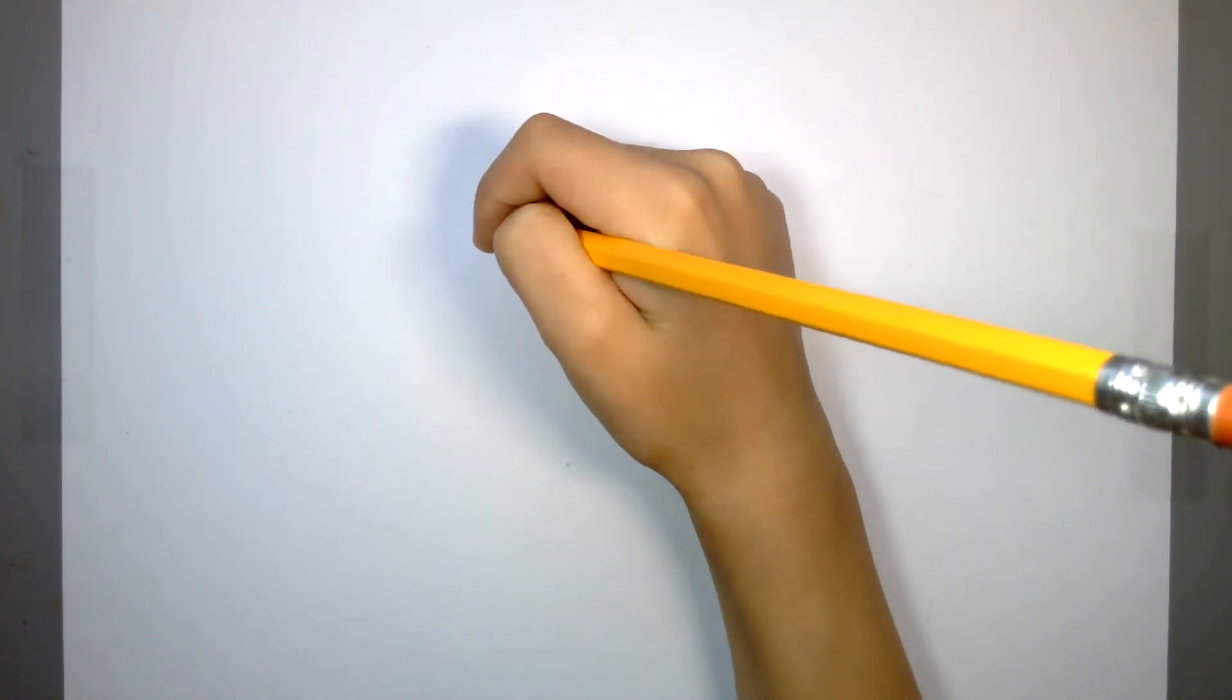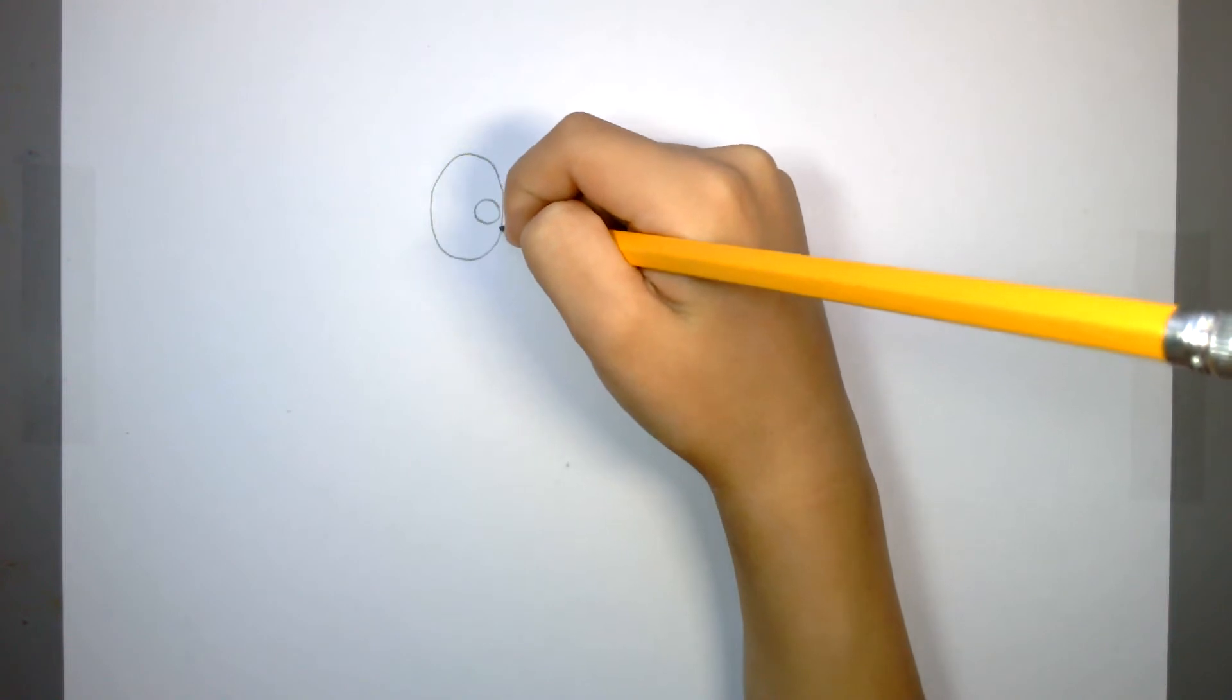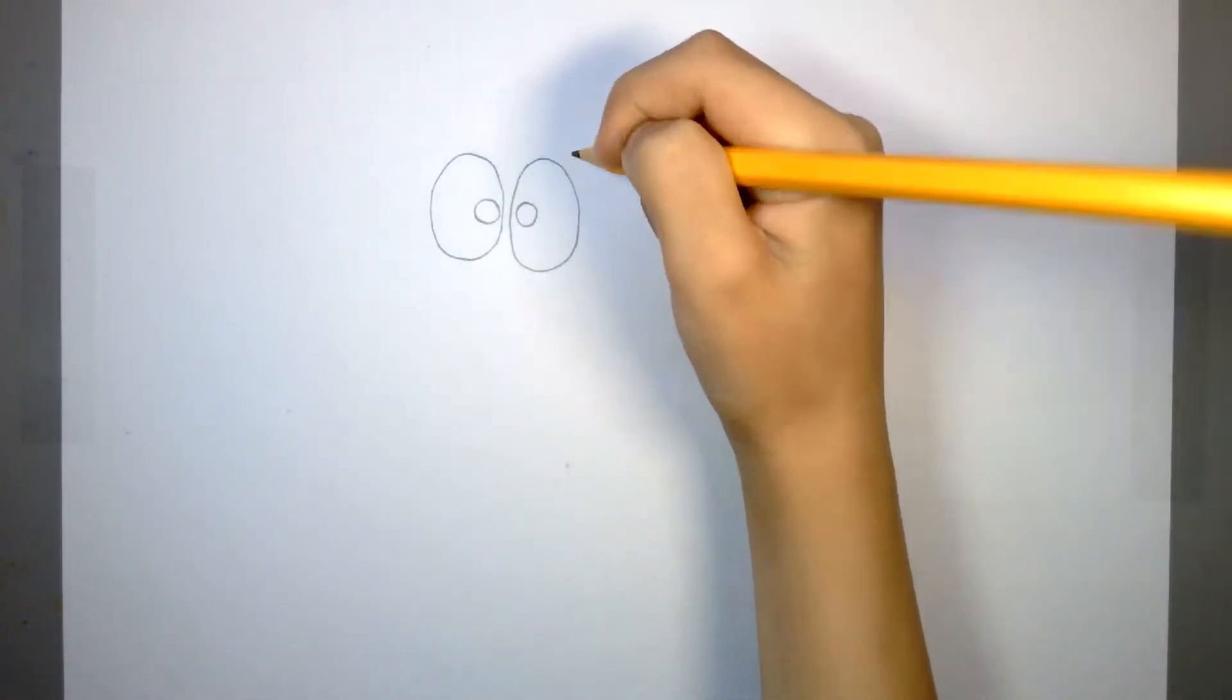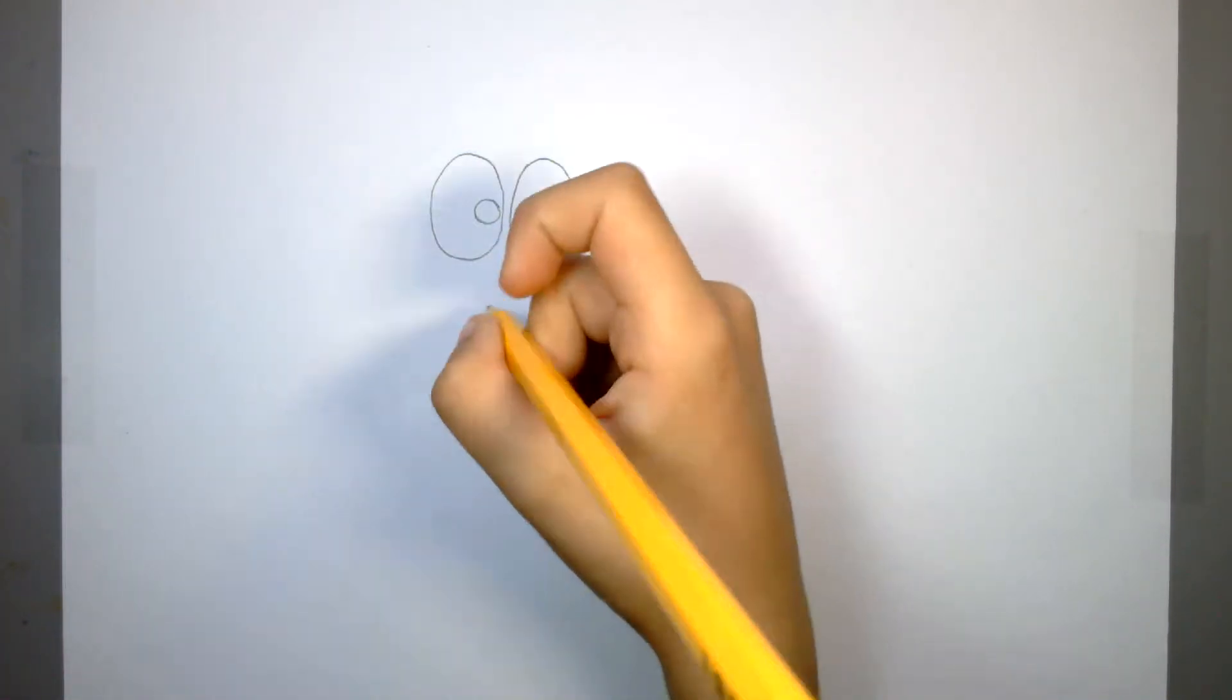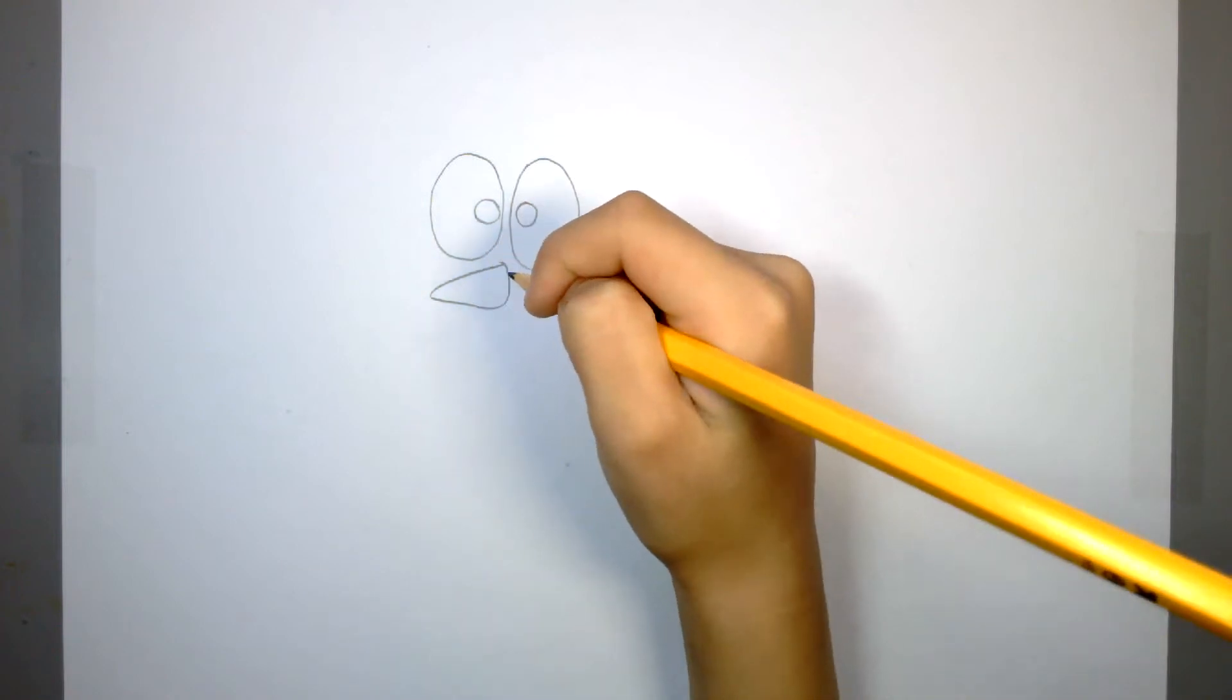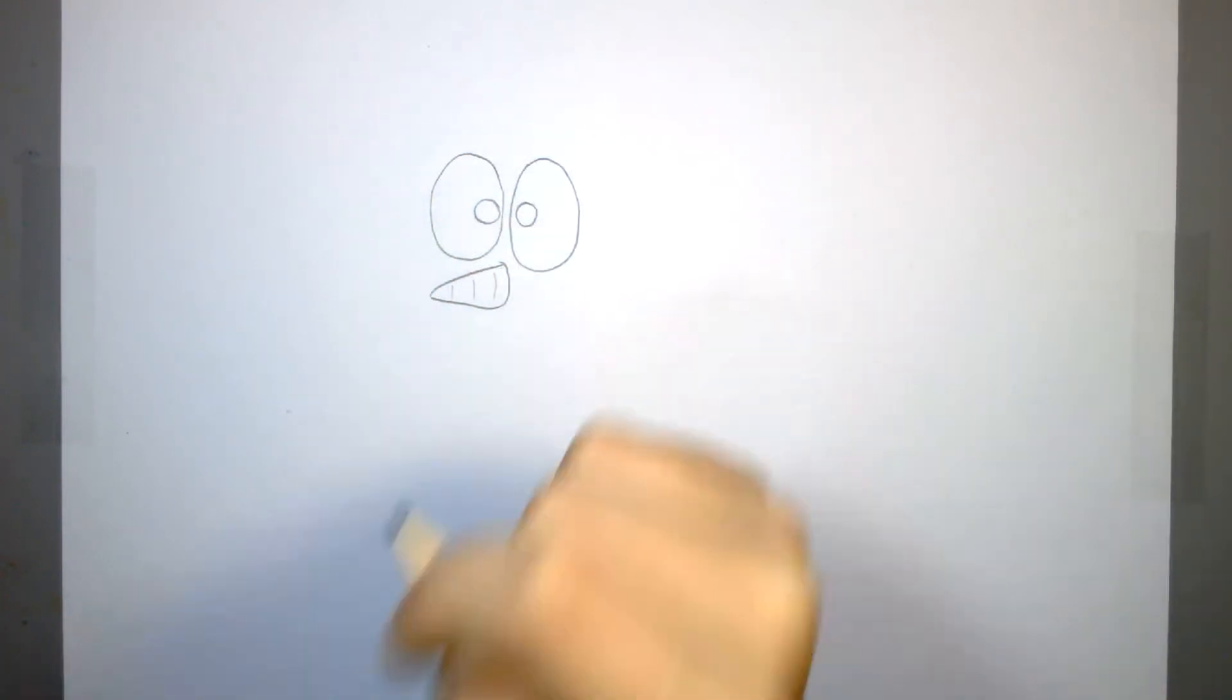So we're going to start with the pupils, and then we're going to do the eyes, and then those are the pupils. Those are big. All right, now I'm going to do his carrot nose.